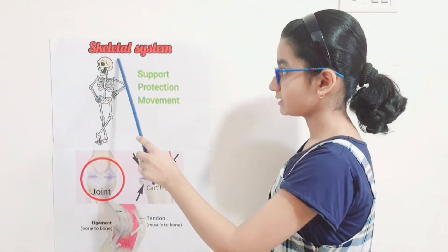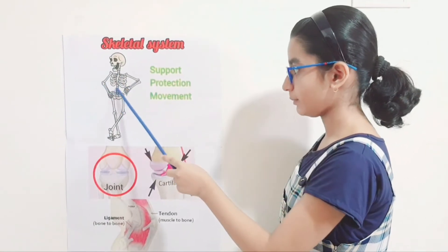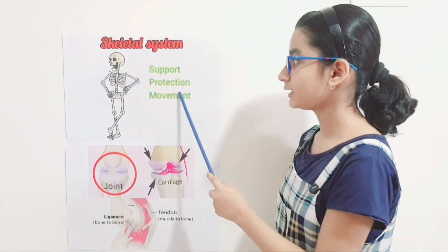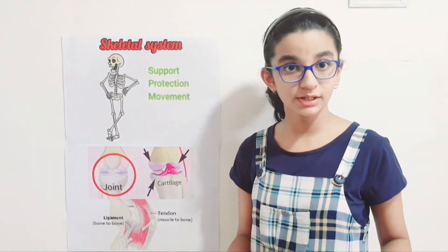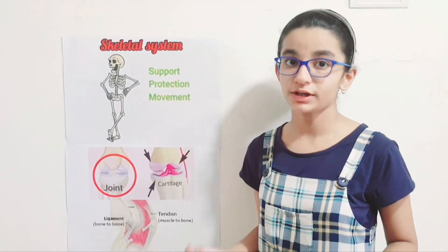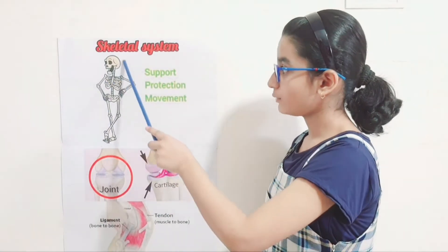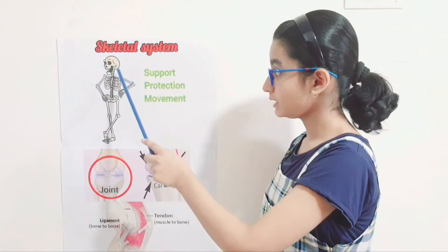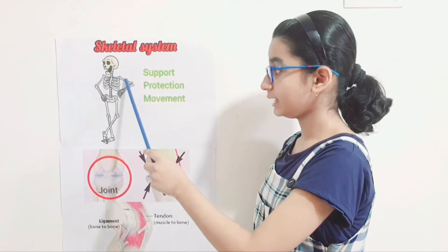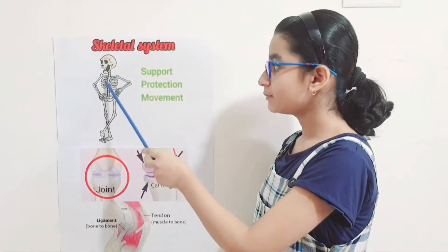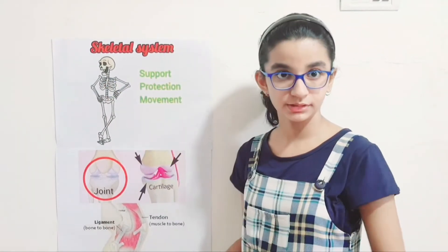Support: the skeleton supports the body and gives it its shape and form. Protection: the skeleton also protects the internal organs of the body. For example, the skull protects the brain, the rib cage protects the heart and lungs, and the backbone protects the spine.